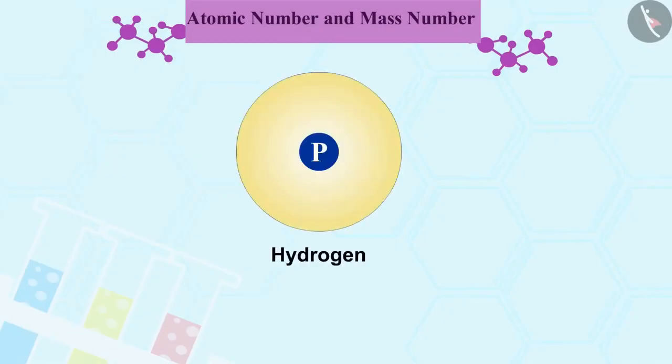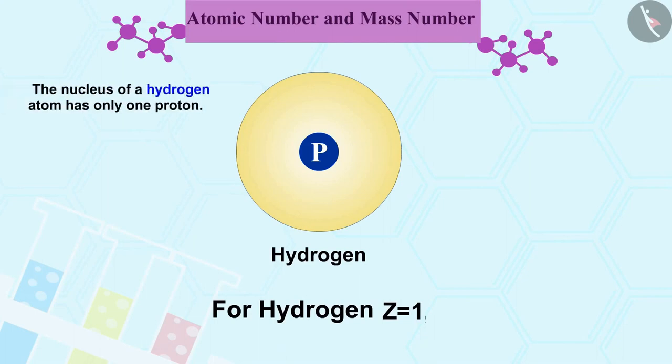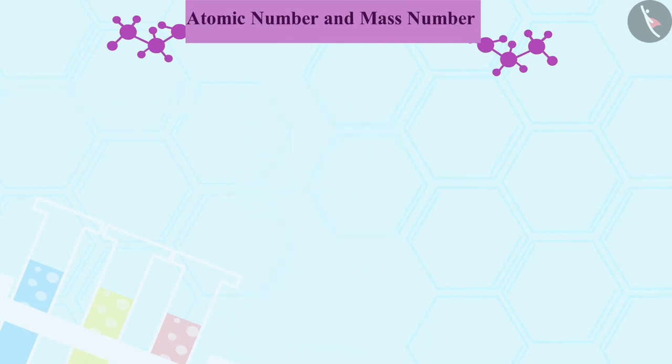For example, Z equals 1 for hydrogen because the nucleus of a hydrogen atom has only one proton. Similarly, Z equals 6 for carbon.